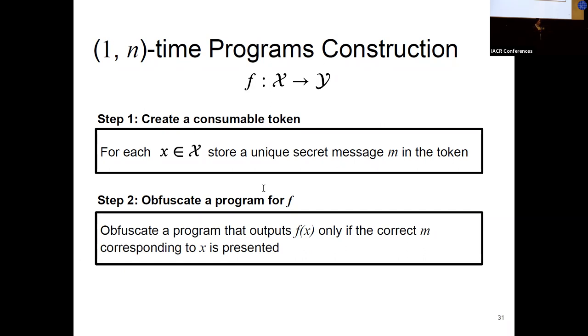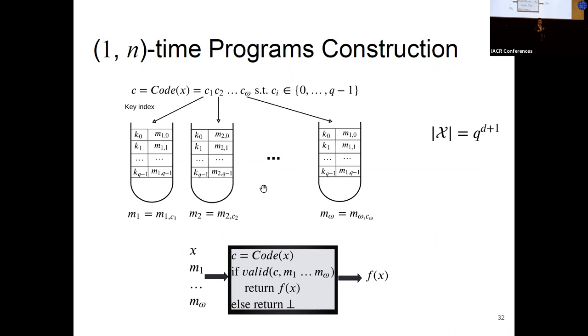And at a high level, the idea is the following. I'm going to start with step two. So you take your function, you package it in a program that is obfuscated in the following way. This program, once it gets the input X, will not output F of X unless you support a secret message that corresponds to the input. And we store this secret message or the secret messages corresponding to the domain of F in a consumable token. So in order to execute, you query the token first based on your input. You get the secret message. You present it to the obfuscated program. It will check that everything is correct, and then it will output F of X. Otherwise, you will get nothing.